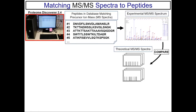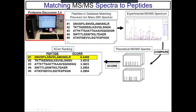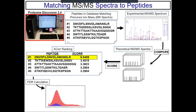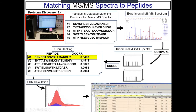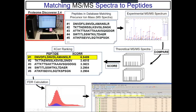You then input your experimental MS-MS spectrum or your raw file, and the software is going to take this experimental spectra and compare it to all of the theoretical spectra that it created in the database. Then it does a score or ranking for the quality of match for each of your experimental spectra. You'll have some sort of cutoff for that, and then you report out these positively identified peptides and proteins.